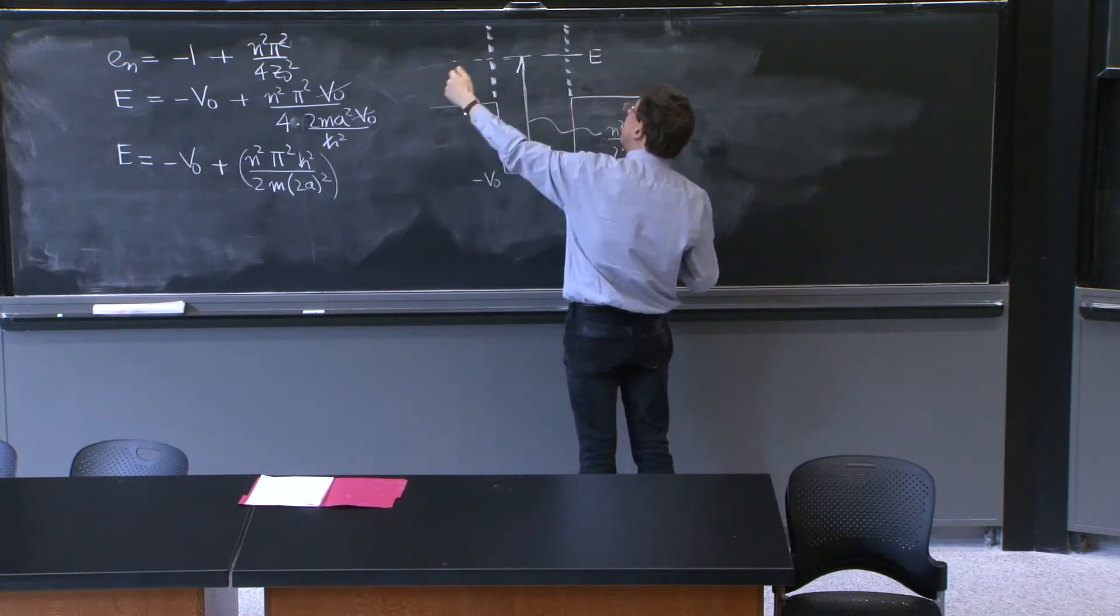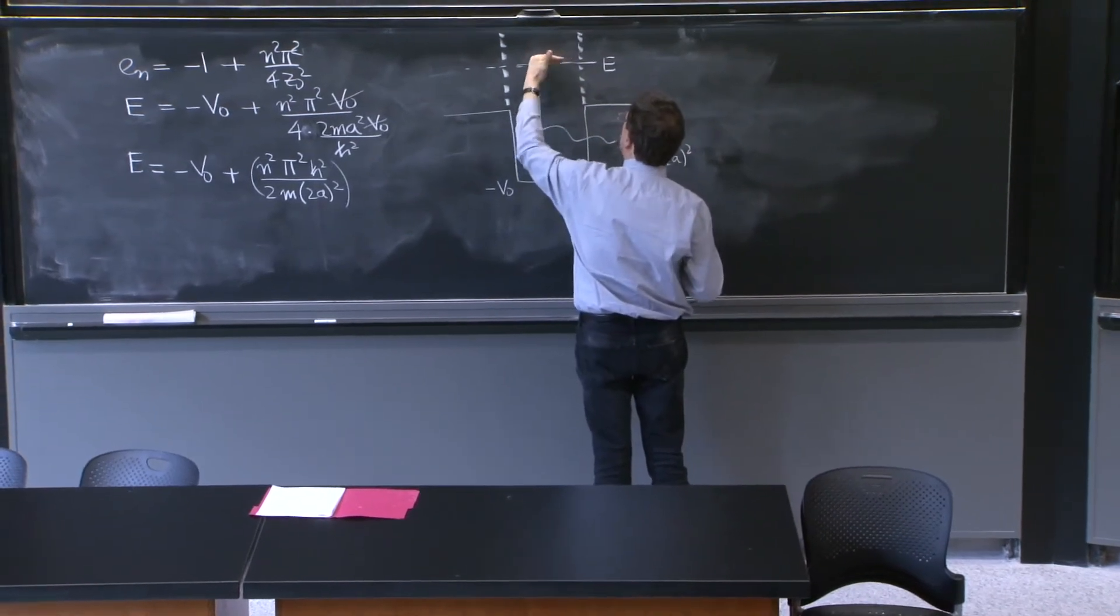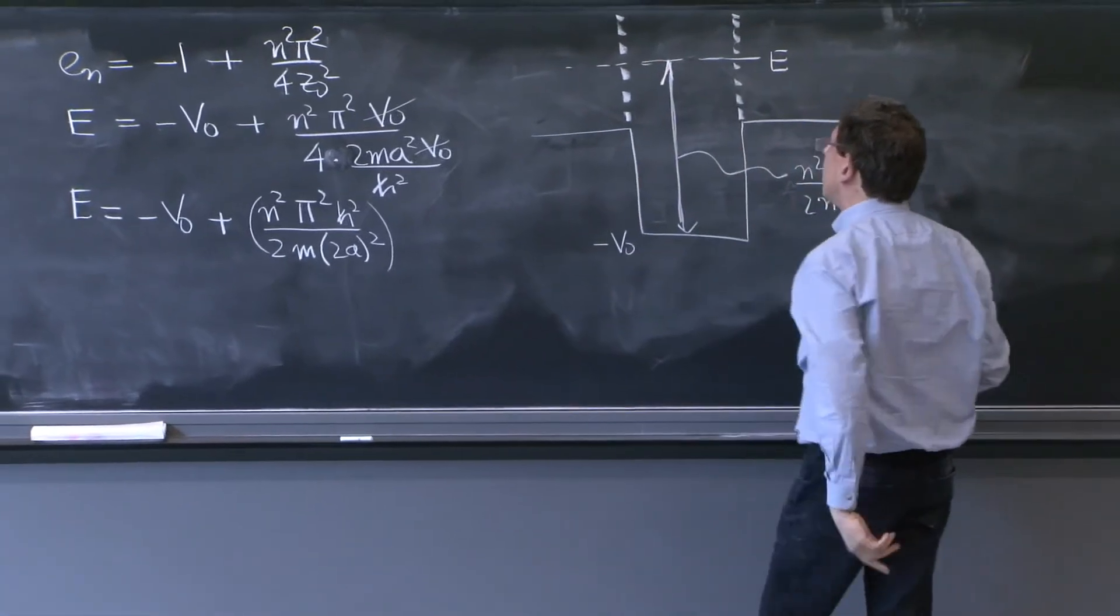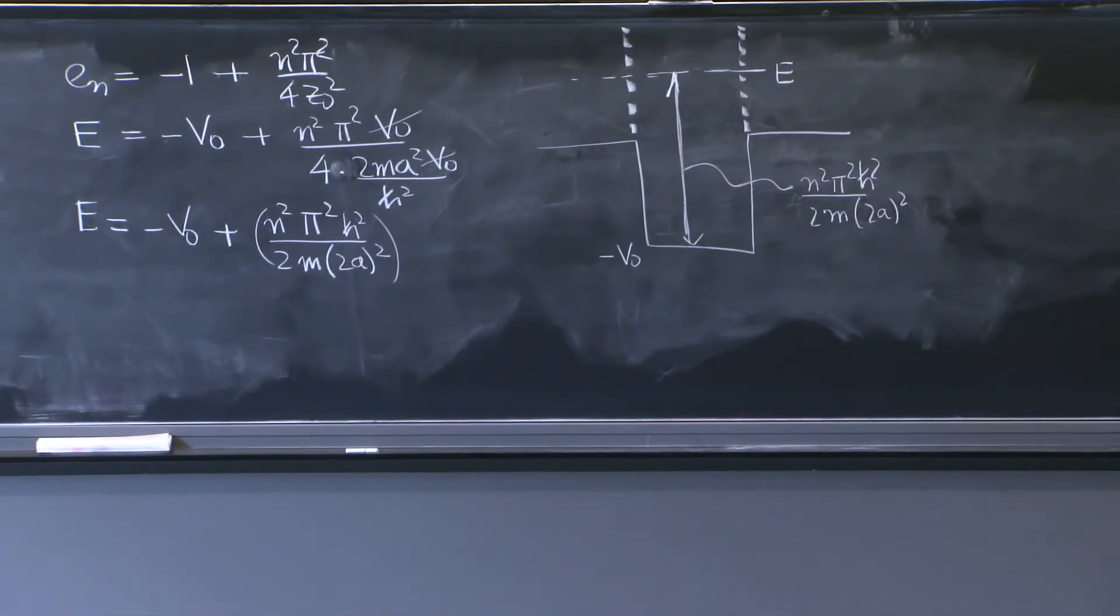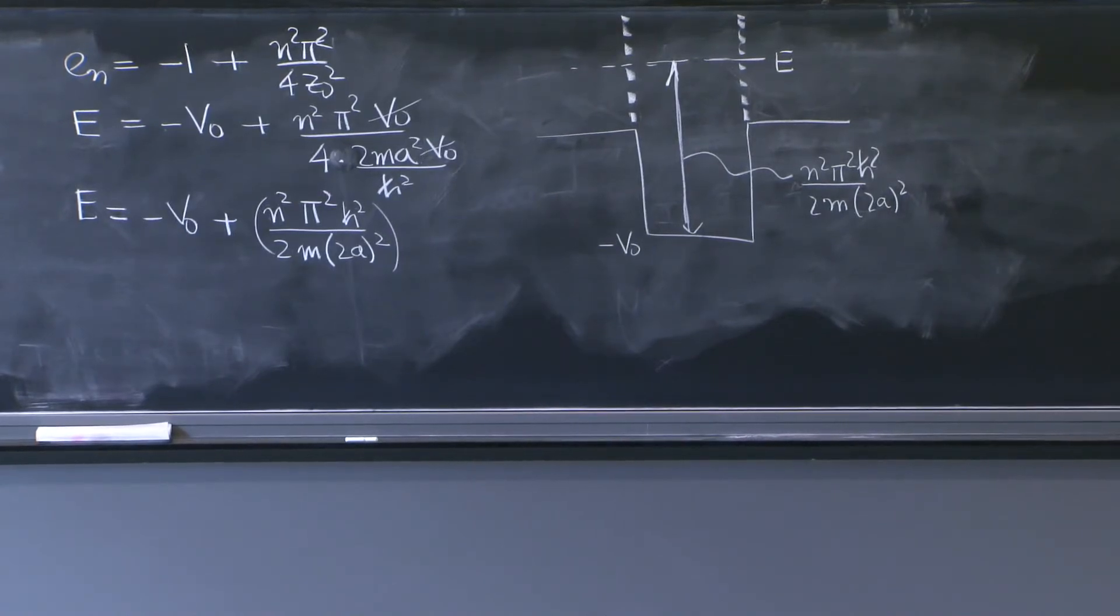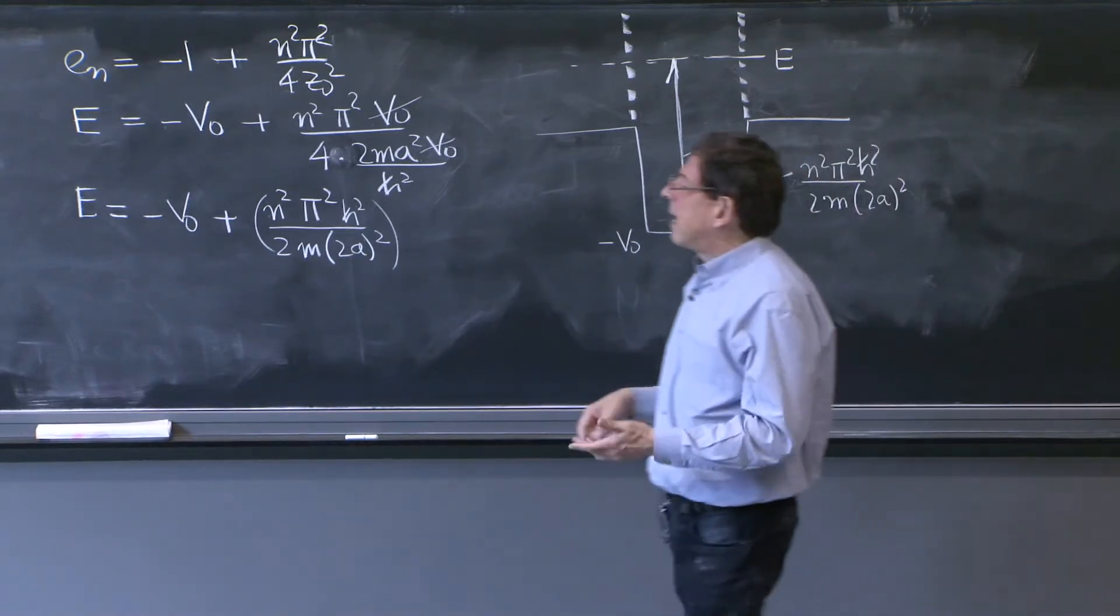you know, there might be bound state energies here, but those are not relevant, because you only consider energies positive. So if you find an energy that is positive, that corresponds to a would-be infinite square well, that's it. That's an energy for which you will have transmission.